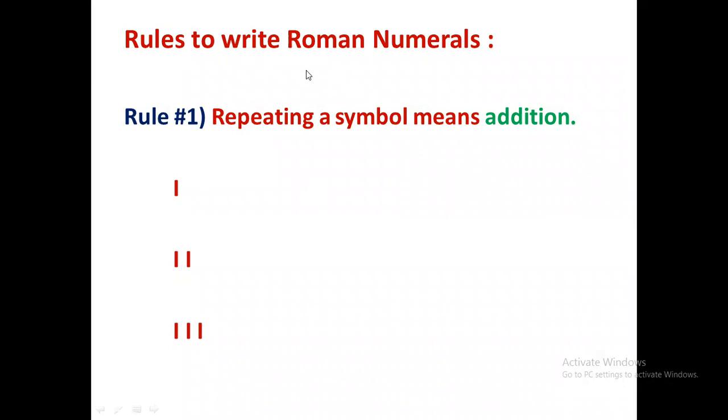There are some rules to write Roman numerals. Rule number 1: Repeating a symbol means addition. This is I, which stands for 1. If you are going to write this symbol again, you are repeating the symbol again. That means addition, 1 plus 1, that is 2. Again here, 1 plus 1 plus 1 will be 3. We have to add them if we are going to repeat some symbol.